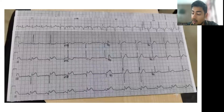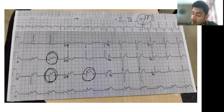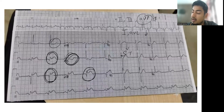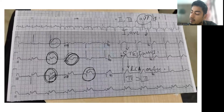In the fifth ECG, there is ST elevation in lead 2, lead 3, and lead aVF, along with reciprocal ST depression in lead 1 and aVL. This is a case of ST-elevated inferior wall MI. Inferior wall MI can be due to the RCA or LCX. Since ST elevation in lead 3 is more than in lead 2, it is mostly because of RCA occlusion.